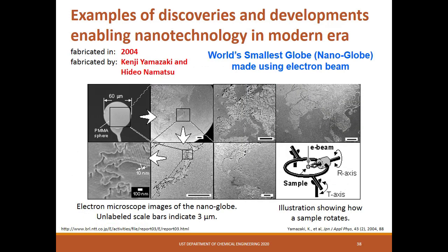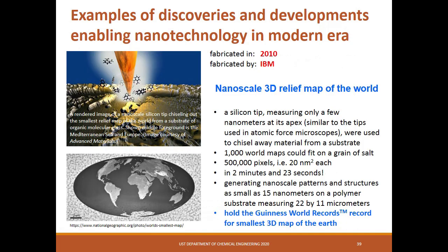In 2004, Kenji Yamazaki and Hideo Namatsu, in their published paper in the Japan Journal of Applied Physics, were able to fabricate the world's smallest globe using an electron beam. And in 2010, IBM fabricated the nanoscale 3D relief map of the world, which holds the Guinness World Record for the smallest 3D map of the Earth. The map has 500,000 pixels and was fabricated in only 2 minutes and 23 seconds, and the sample was so small that 1,000 of them could fit in a grain of salt.